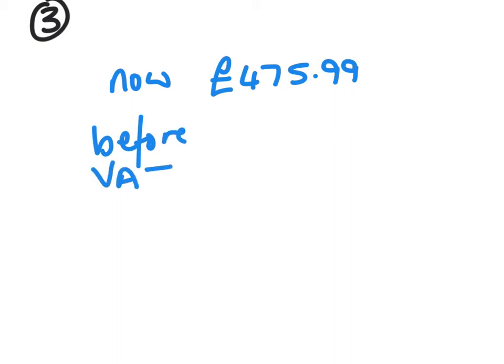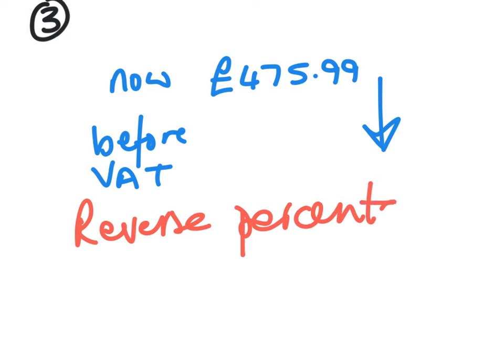For question three: a TV set now costs £475.99. We want to know what it was before the VAT was added, so we're going backwards in time. Backwards in time means it's a reverse percentage. We know how to work out those - we get the multiplier.